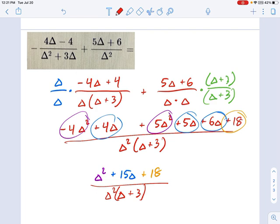And is there any way we can factor this? Well, let's just check it out. I'm looking for factors of 18 which add up to 15. There might not be. Every now and then you run into something that does not cancel. That doesn't mean you did it wrong, although you should always check your work.